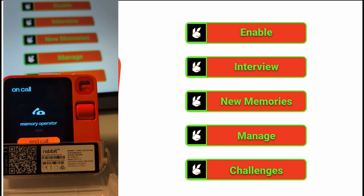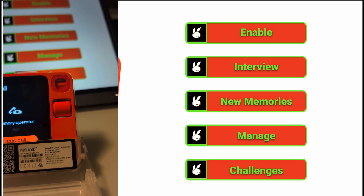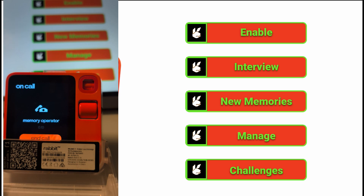The memory operator calls: 'Hello there!' — 'Hi, I'm doing great.' The operator introduces itself: 'I'm your memory operator, here to help you set up the memory feature on your Rabbit R1. What's your name?' — 'You can call me Roe Drop.' — 'Okay, Roe Drop, I'll be asking you a few questions to get to know you better. Are you comfortable with that?' — 'Sure.' — 'Great, let's start. What do you like to do in your spare time?'